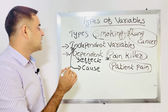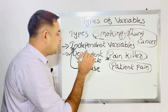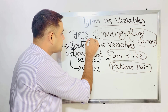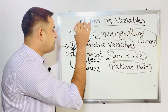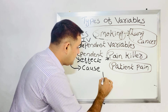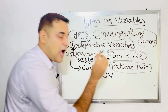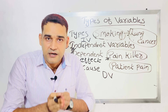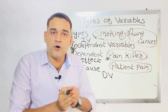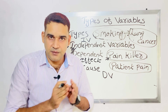In research, you can see short forms. Independent variable is always written as IV, and dependent variable is always written as DV.